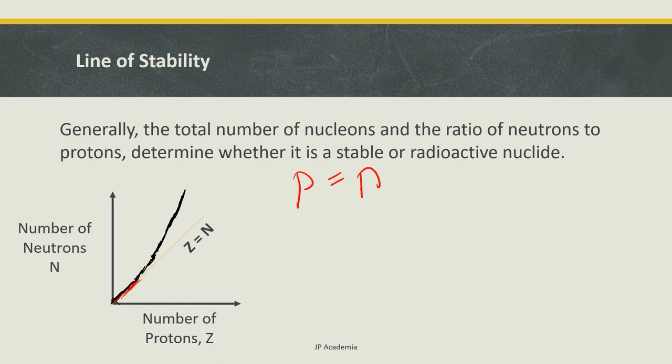However, nuclides with larger values of Z, larger values of protons, require an even larger number of neutrons, so that N is greater than Z to become stable.